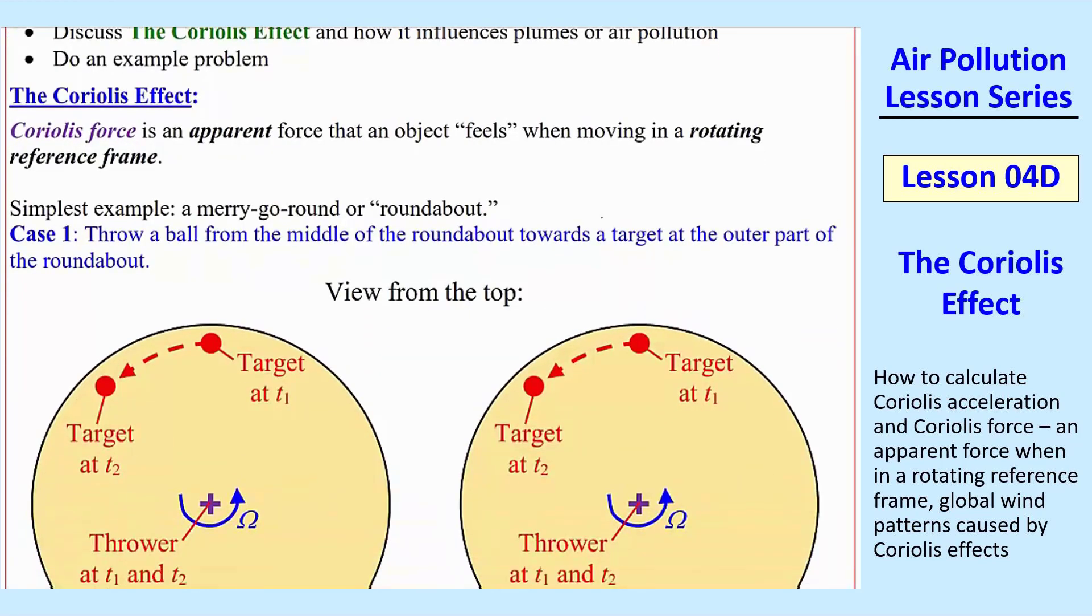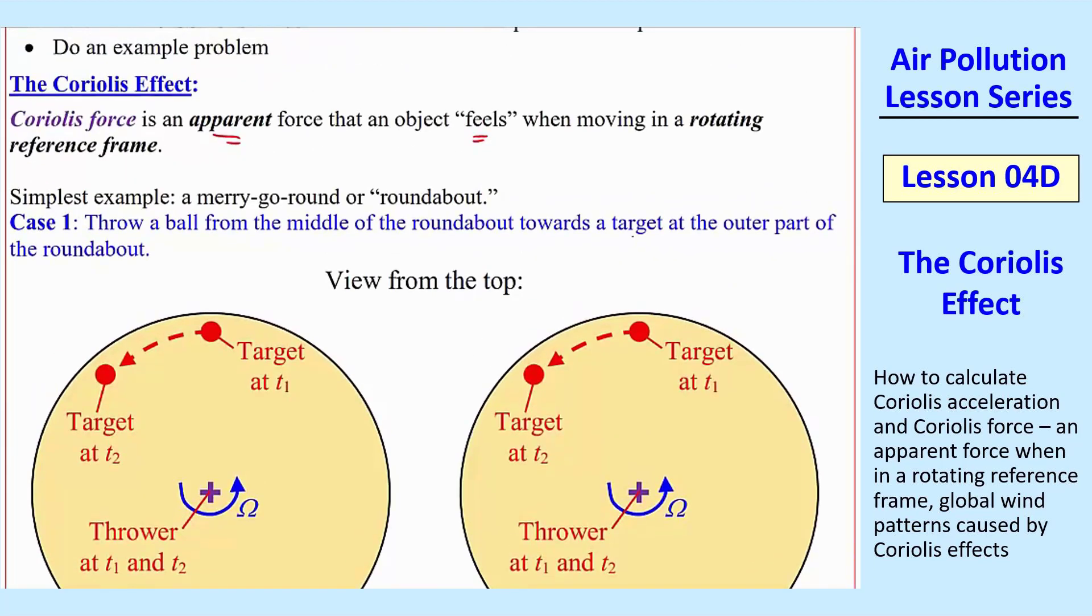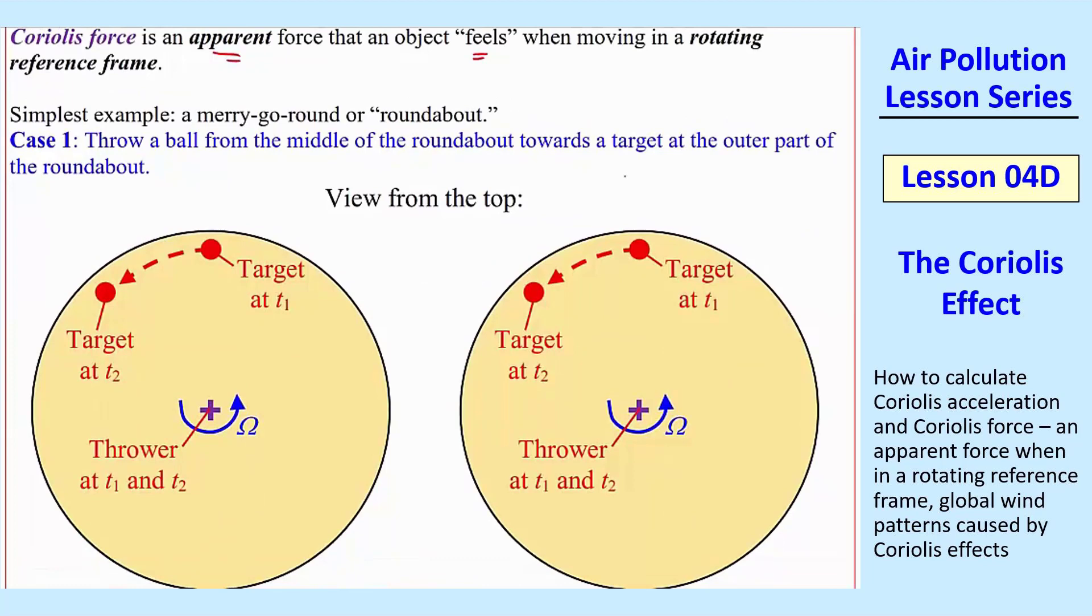So here's the Coriolis Effect. What is it? It's an apparent force that an object feels, in quotes, when moving in a rotating reference frame. So Coriolis only happens when you're in a rotating reference frame. And it's kind of a fake force, an apparent force. And we'll use a simple merry-go-round as an example.